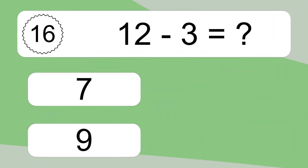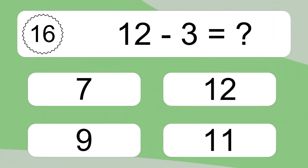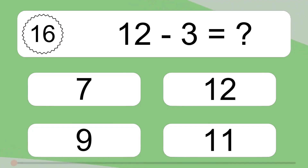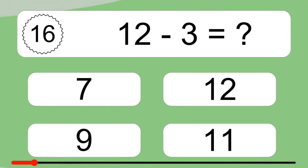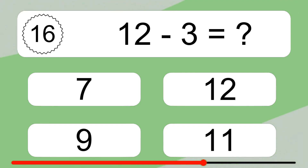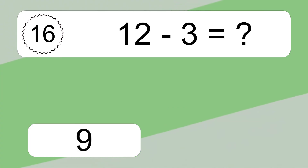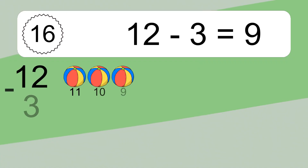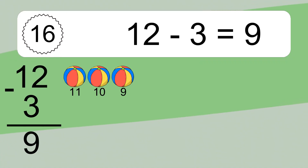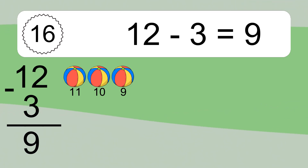12 minus 3 equals what? 12 minus 3 equals 9. Let's count it: 11, 10, 9.